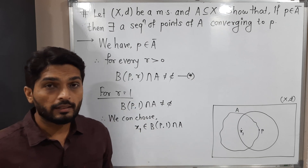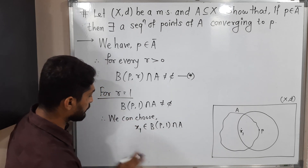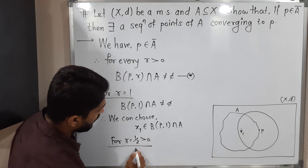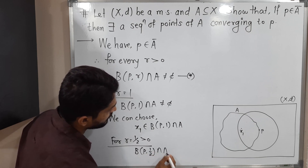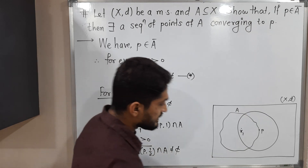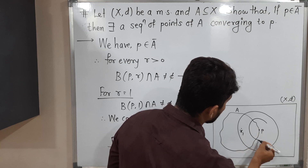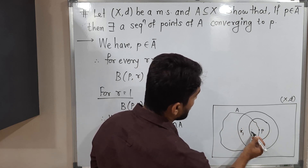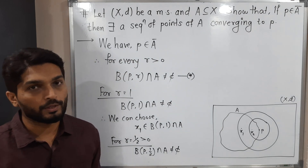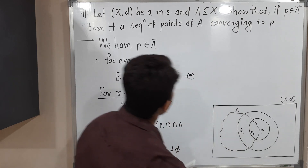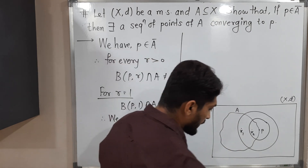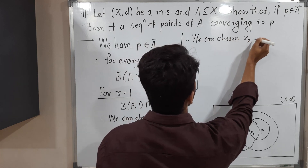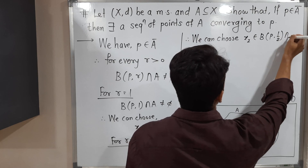As I told you earlier, this is true for every r. So here we had selected r equal to 1. Now I will take r equal to 1/2. I am reducing the value of r. For r equal to 1/2, which is also obviously greater than 0, B(P, 1/2) intersection A is not equal to empty. That means taking radius 1/2 and drawing a ball around P, it still intersects A. So here we can select some point X2. Therefore, we can choose X2 belonging to B(P, 1/2) intersection A.